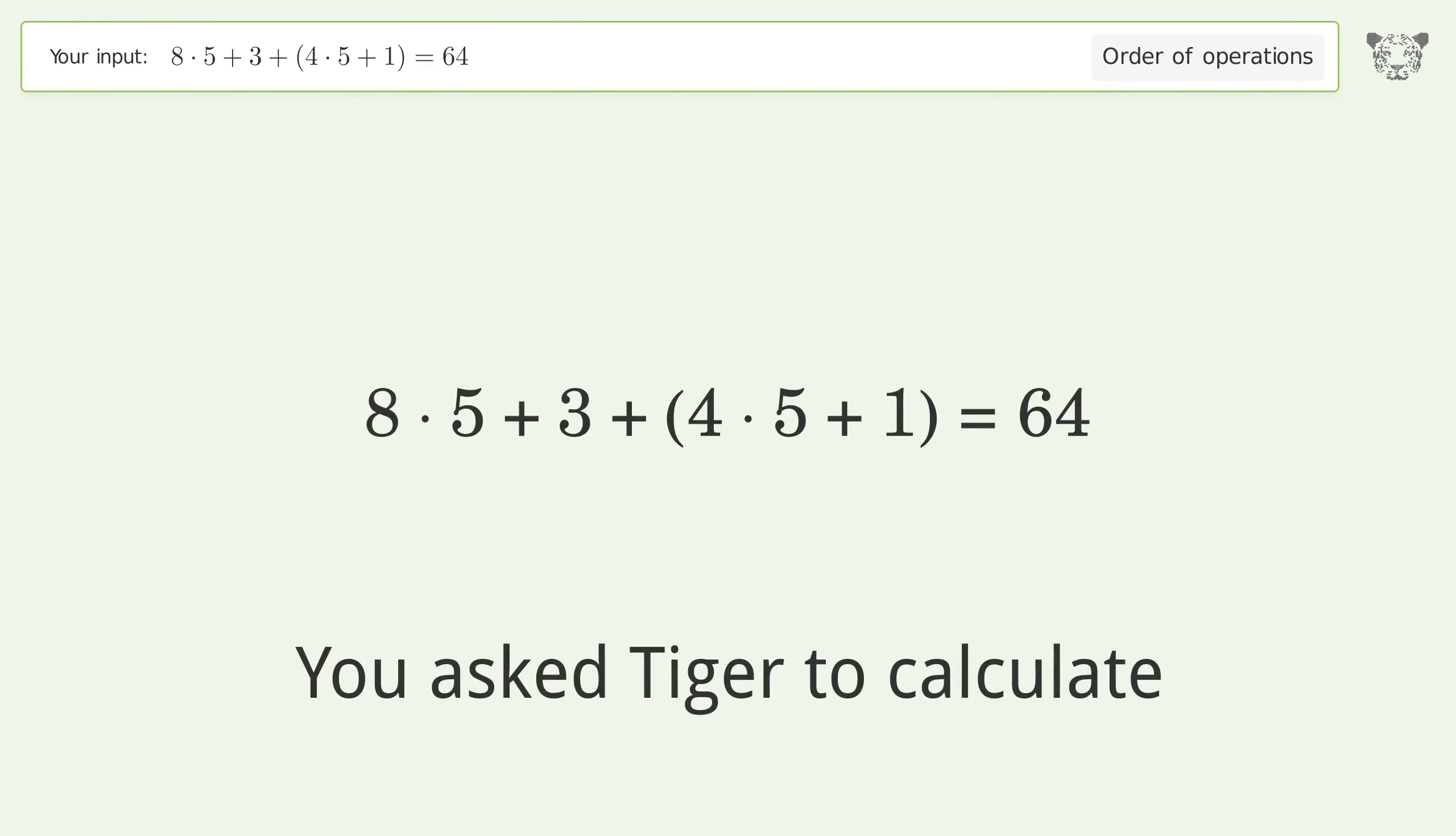You asked Tiger to calculate this. This deals with the order of operations. The final result is 64 equals 64. Let's solve it step by step.